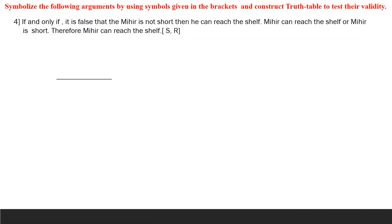Now we come to the fourth example — if and only if. It is false that Mir is not short, then he can reach the shelf. This is the first premise. The second premise is: Mir can reach the shelf or Mir is short. Therefore, Mir can reach the shelf. We let S represent 'Mir is not short' and R represent 'he can reach the shelf.'